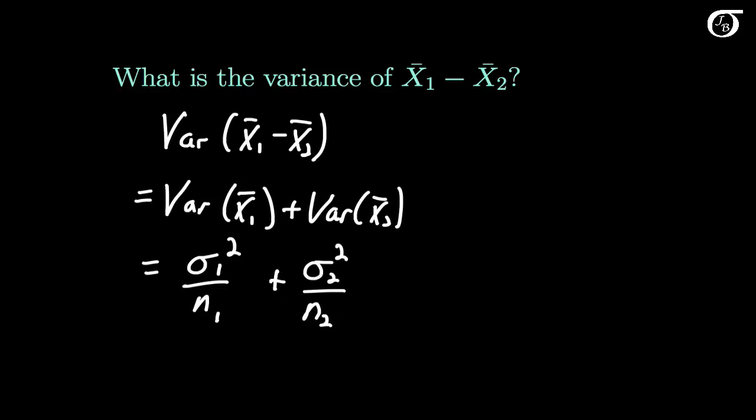Why plus instead of minus? The short, overly simplified version is that variance is a squared quantity, and that minus one would get squared away. One thing to note again: this is the variance if we have two independent samples. If the samples are dependent, it gets a little bit more complicated.